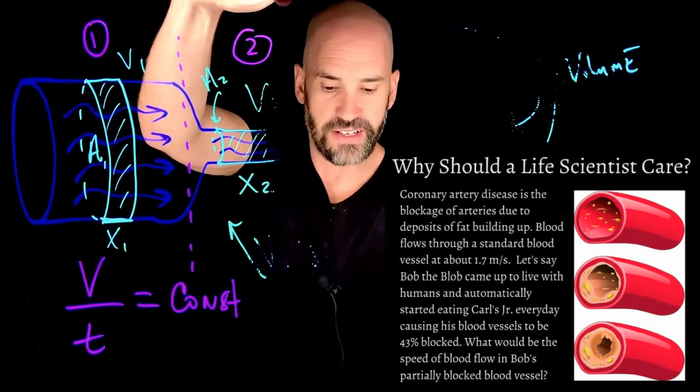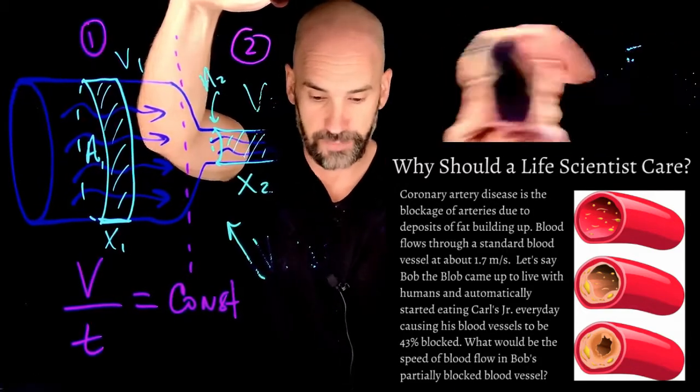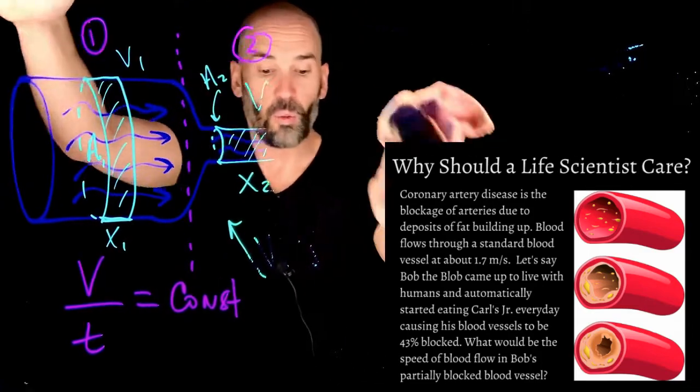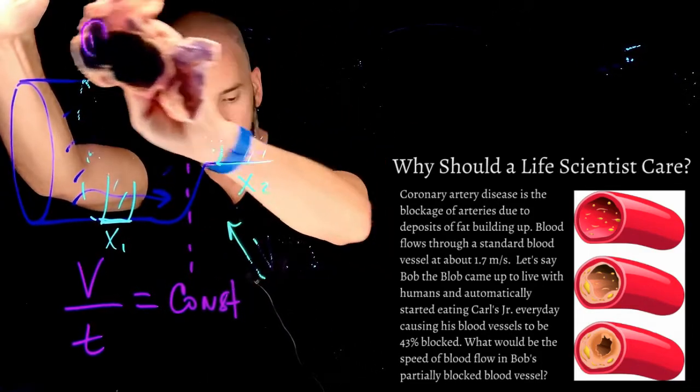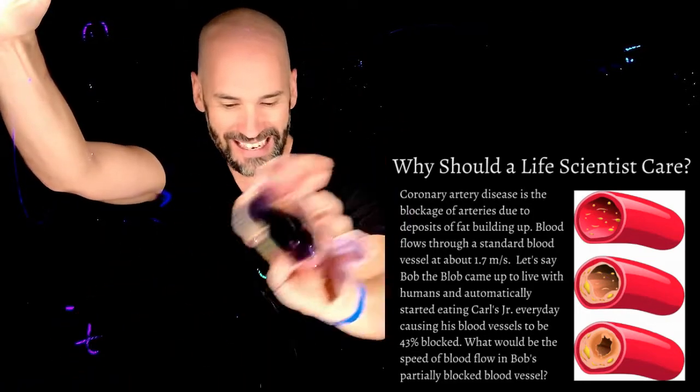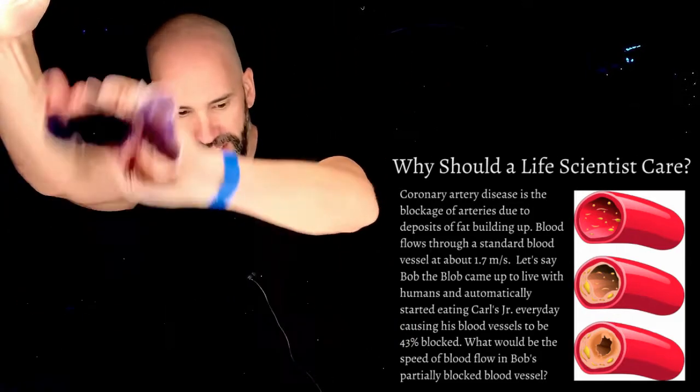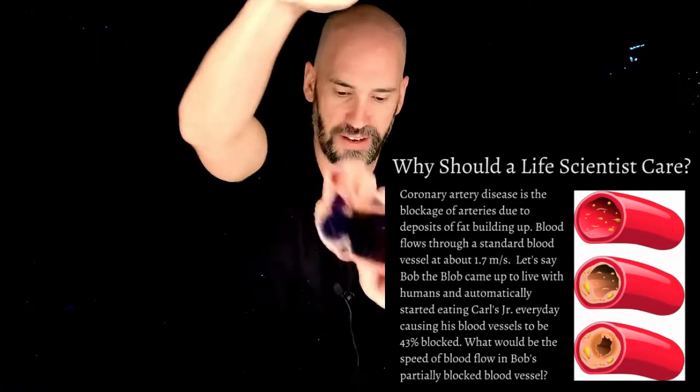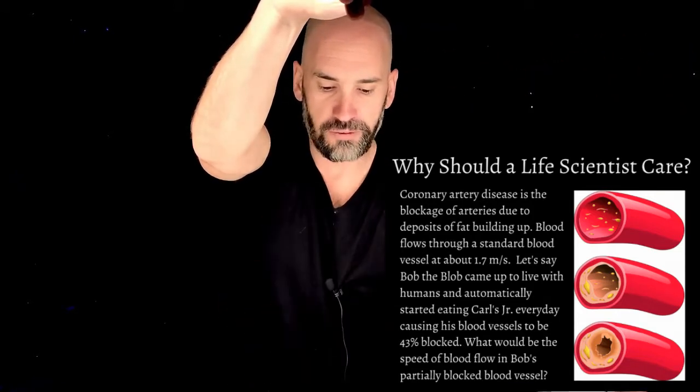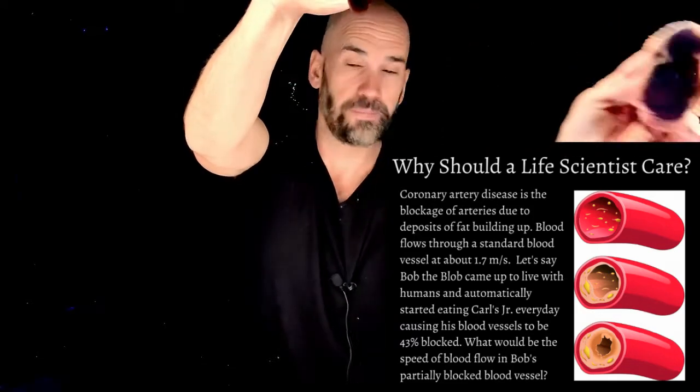So it says coronary artery disease is the blockage of arteries due to the deposits of fat building up. Blood flows through a standard blood vessel at about 1.7 meters per second. Let's say that Bob the blob came up to live with humans and automatically started eating Carl's Jr. every day. Sorry, I crack myself up sometimes. It causing his blood vessels to be 43% blocked. What would be the speed of blood flow in Bob's partially blocked blood vessels?